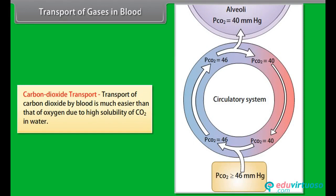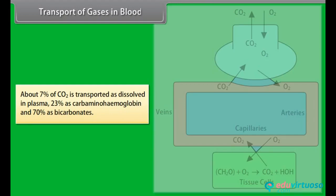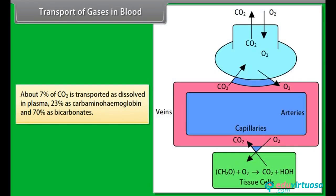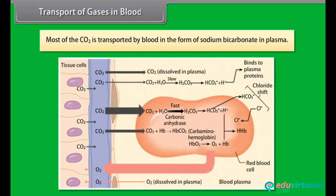Carbon dioxide transport: Transport of carbon dioxide by blood is much easier than that of oxygen due to the high solubility of CO2 in water. About 7% of CO2 is transported dissolved in plasma, 23% as carbaminohemoglobin, and 70% as bicarbonates. Most of the CO2 is transported by blood in the form of sodium bicarbonate in plasma.